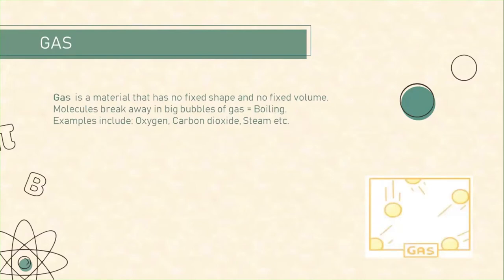Gas is a material that has no fixed shape and no fixed volume. A gas quickly fills up any space available and gas is also a fluid because it can move from one point to another. Particles of a gas are free to move about. There are no forces of attraction. Sometimes they collide with one another and the walls of the container. Molecules break away in big bubbles of gas, or it can be called boiling. For example, oxygen, carbon dioxide, and steam.